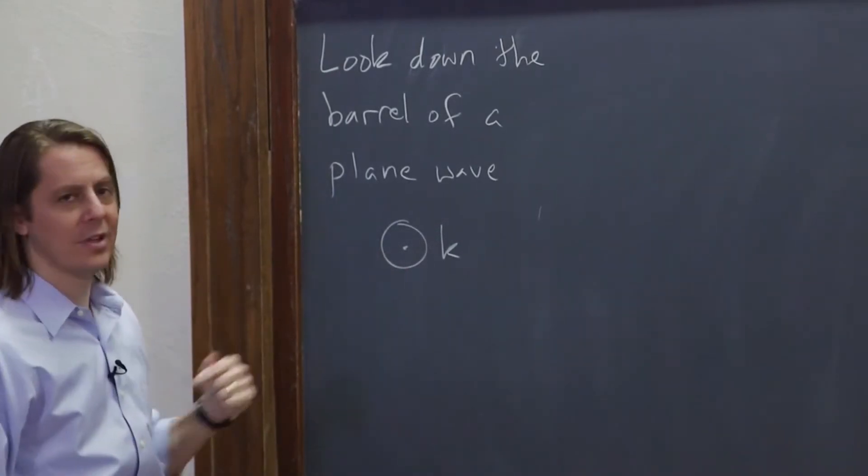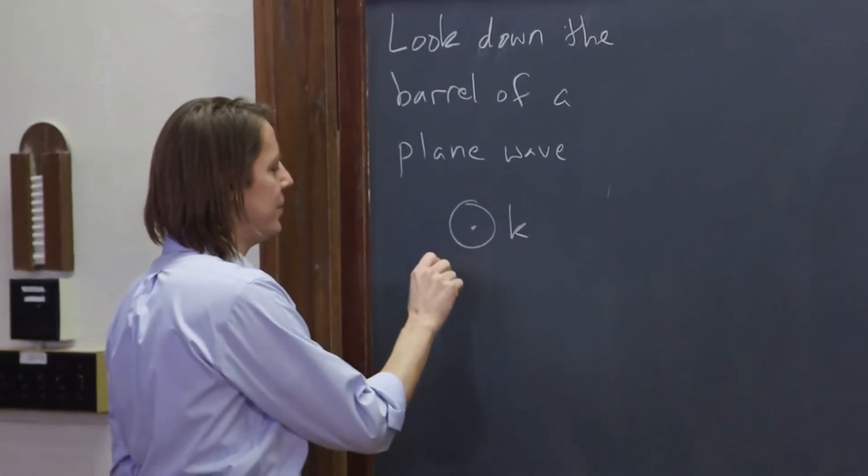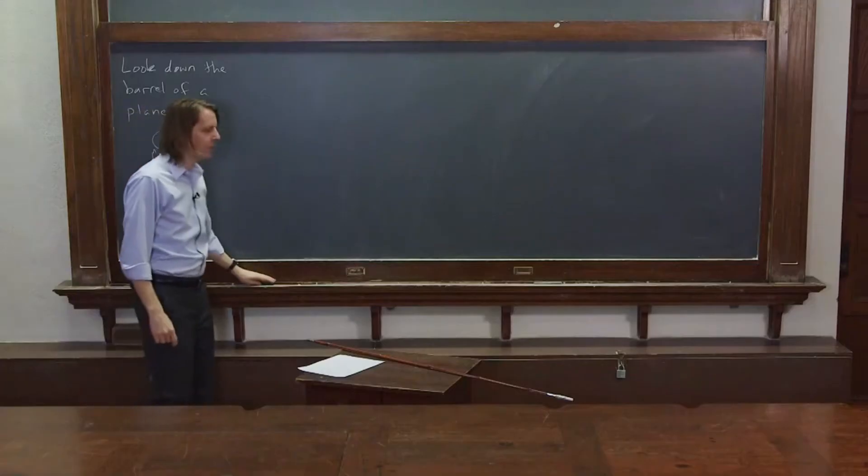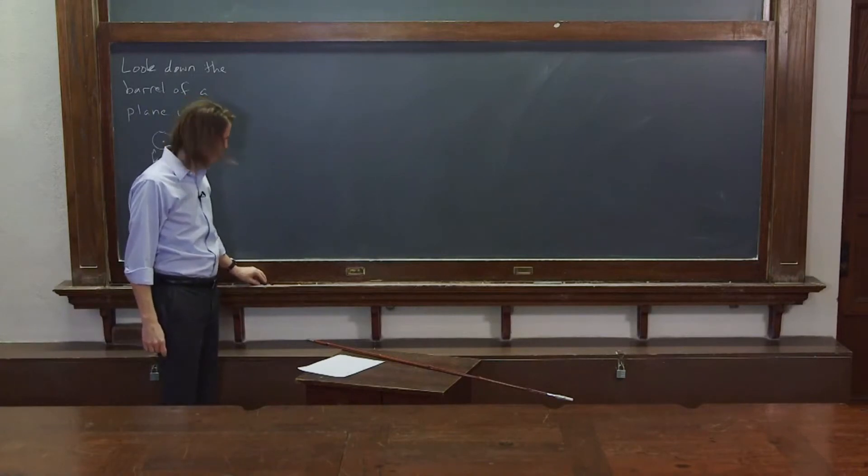K sticks at us. So we'll put k on the z-axis, put k on k-hat. And let's see what a plane wave would look like if we were to do that. It'll look something like this.